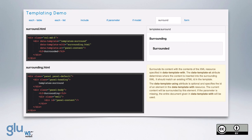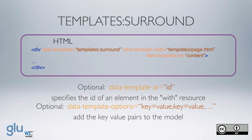The data-template-using attribute is optional and specifies the id of an element in the data-template-with resource. The current content will be surrounded by this element; if the parameter is missing, the entire document given in data-template-with will be used. There is also the additional option of adding key-value pairs, which are added into the model being passed, and the surrounded value gets passed.